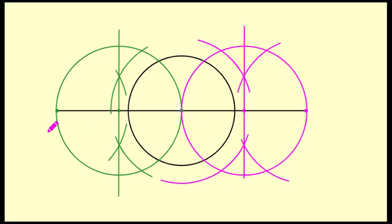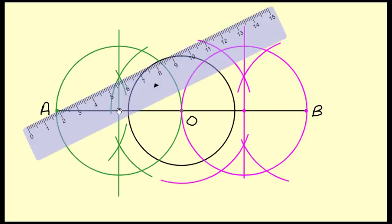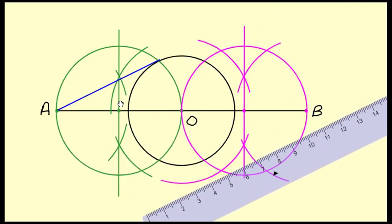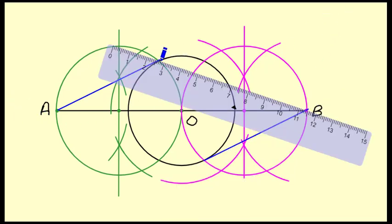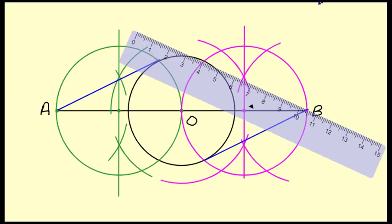Now we have to draw the tangents from these exterior points to the main circle. From point P you will draw the circle towards it to get the tangent intersection points, and similarly from point Q. We have drawn the tangents and will draw another tangent from the other side as well.